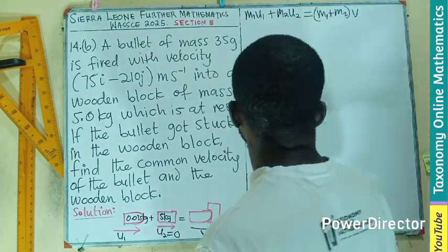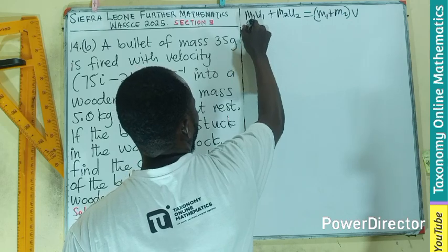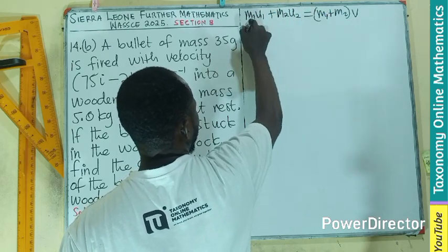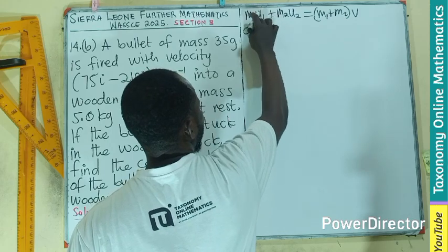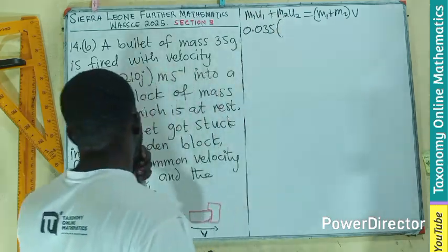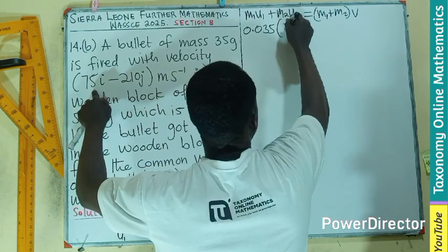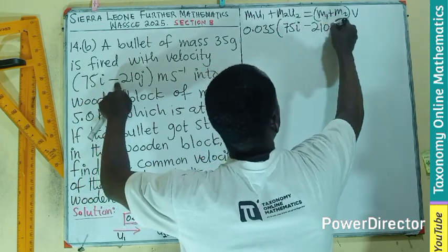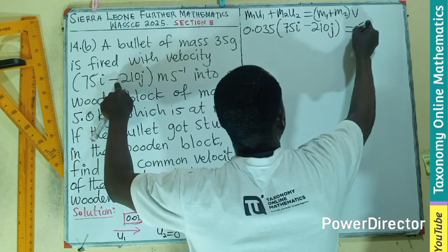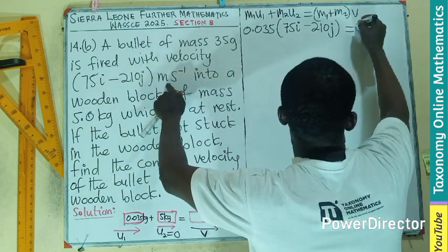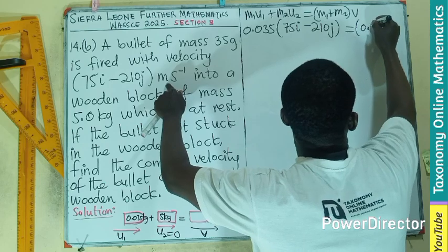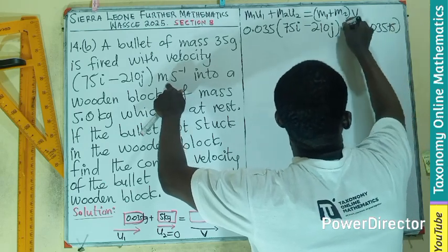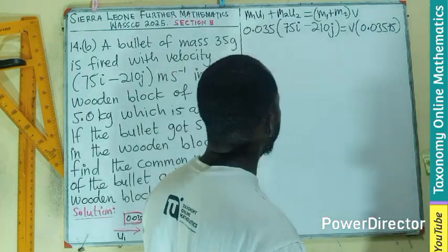Since U2 is 0, that term cancels. So we have 0.035 multiplied by the velocity 75i minus 10j, and this equals (0.035 plus 5) multiplied by our common velocity V.